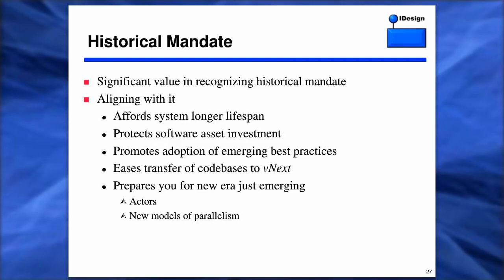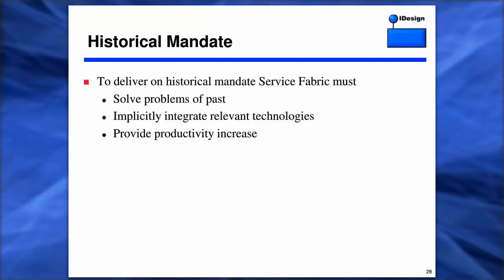There is significant value in recognizing the historical mandate. That's why we're exploring the origins of the fabric — if you can align with it now, you can give your systems a longer lifespan. From the business perspective, it protects the investment of your software assets, promotes emerging best practices, and eases the transfer of your code and systems to vNext. Part of this is also getting ready for the new era that's just emerging: actors and new models of parallelism. To validate whether the fabric delivers on this mandate, it has to solve the problems of the past, implicitly integrate relevant technologies, and provide clear productivity increases over what you're doing today.